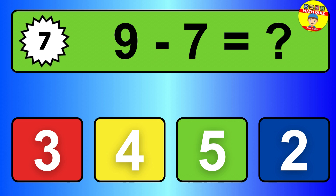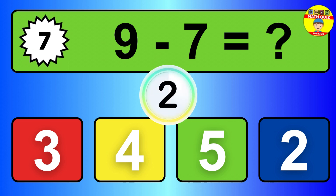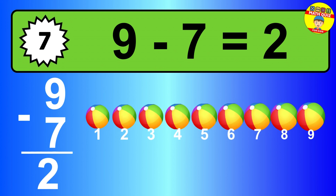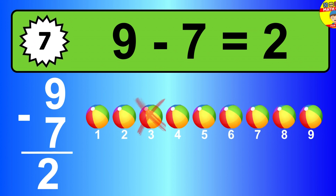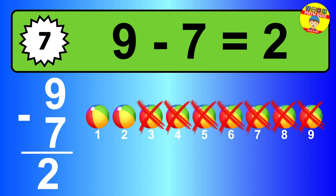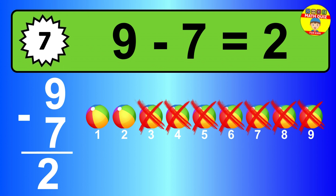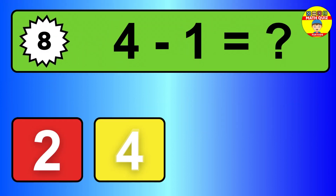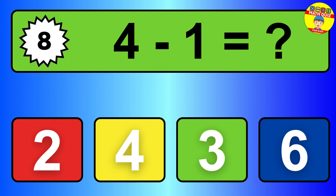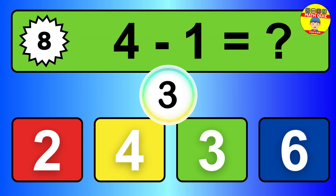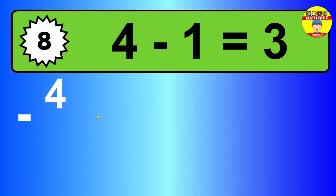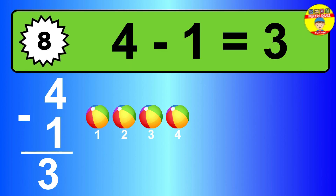Question seven. Nine minus seven equals what? So the answer is nine minus seven is two. Let's count it. One, two. Question eight. Four minus one equals what? So the answer is four minus one is three. Let's count it. One, two, three.